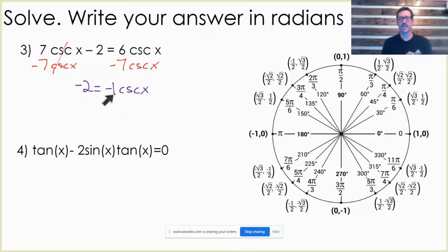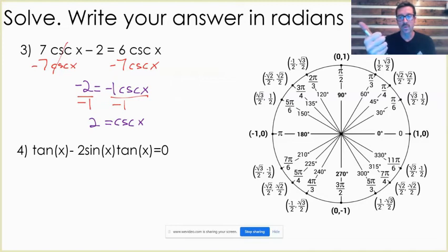Then I've got this leading coefficient of negative 1, and so I'm going to divide by negative 1 on both sides of my equation. Now, we know that if I'm looking for sine, I'm looking for the y-coordinate. If it's cosine, I'm looking for the x-coordinate, and tangent is y over x.